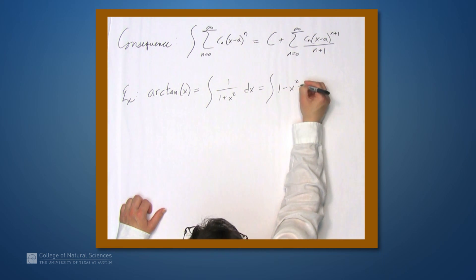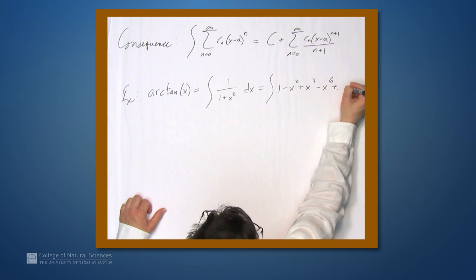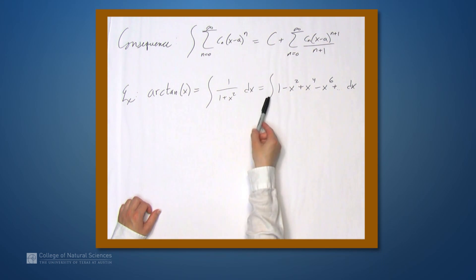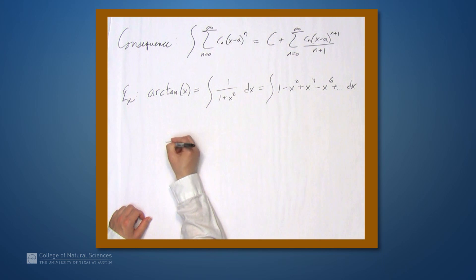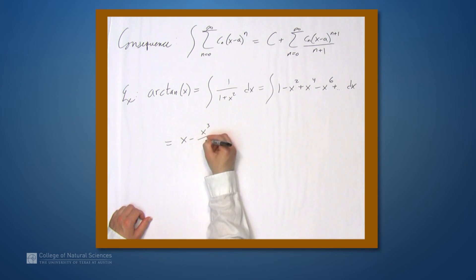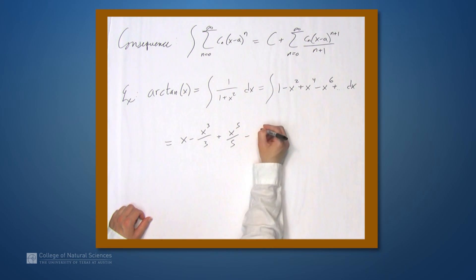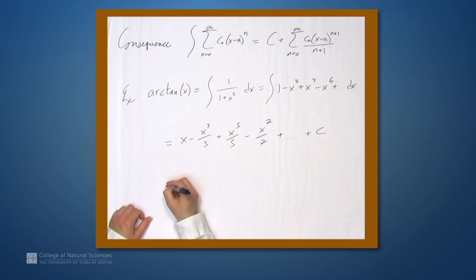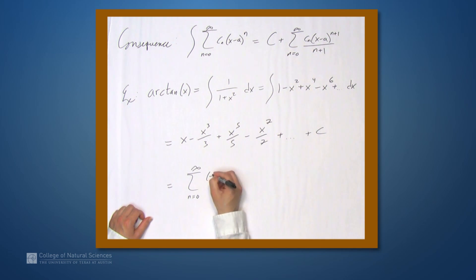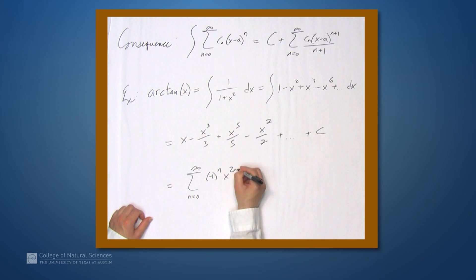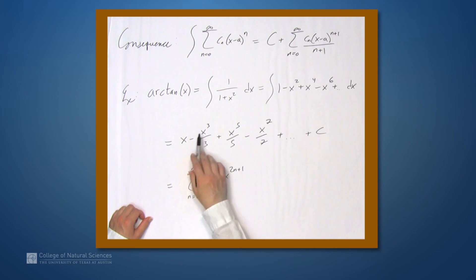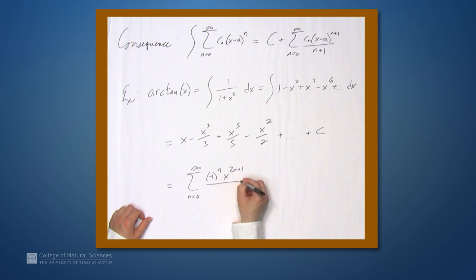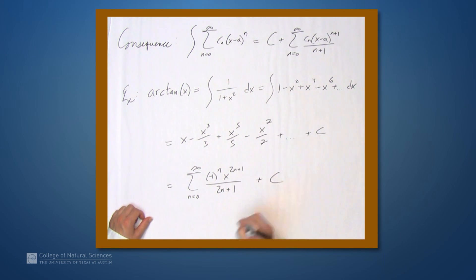We know the infinite series representation of 1 over 1 plus x squared: it's 1 minus x squared plus x to the 4th minus x to the 6th and so on. Antidifferentiating term by term, we get x minus x cubed over 3 plus x to the 5th over 5 minus x to the 7th over 7, plus and so on, plus c. This equals the sum from n equals 0 to infinity of negative 1 to the n times x to the 2n plus 1 all over 2n plus 1, plus c.